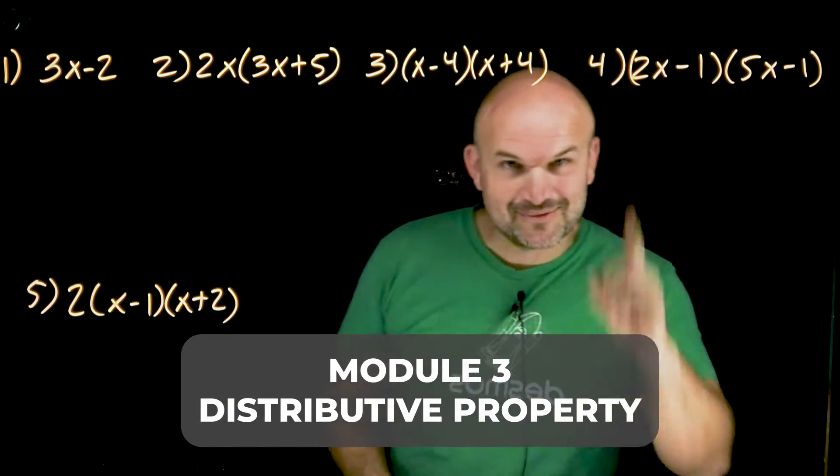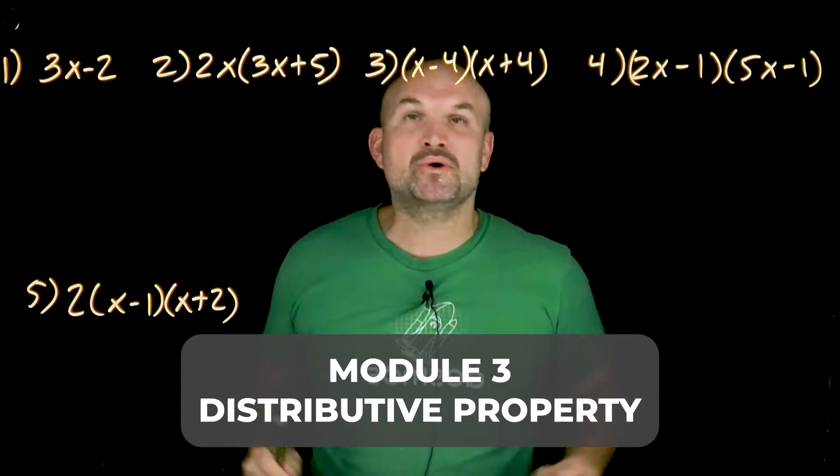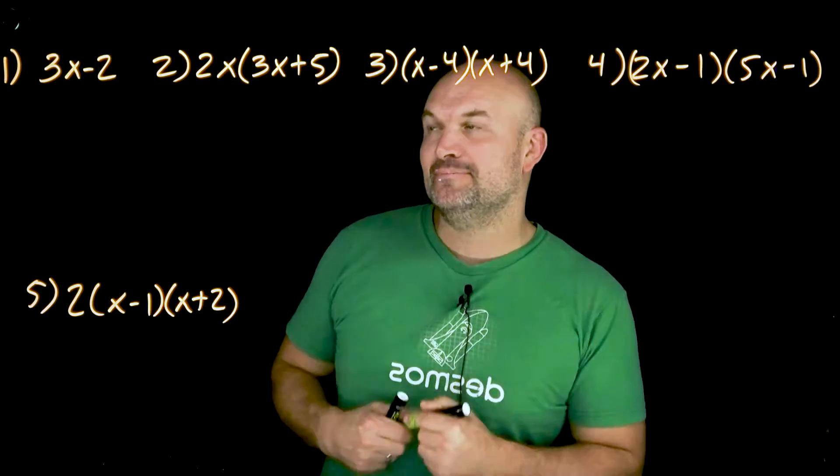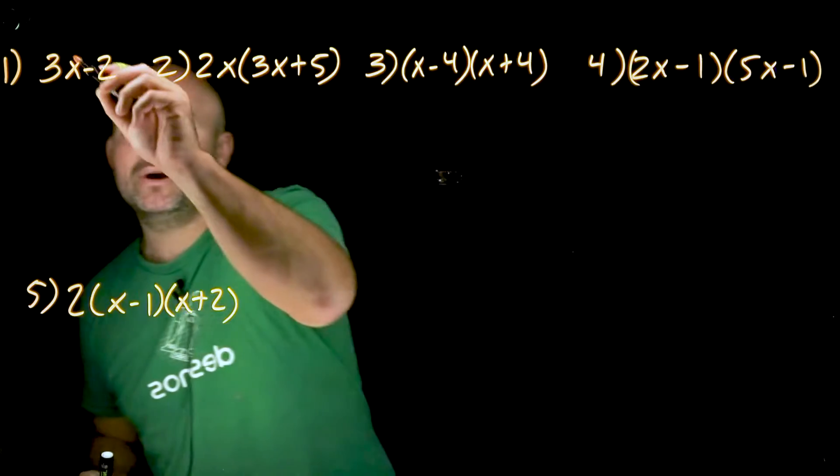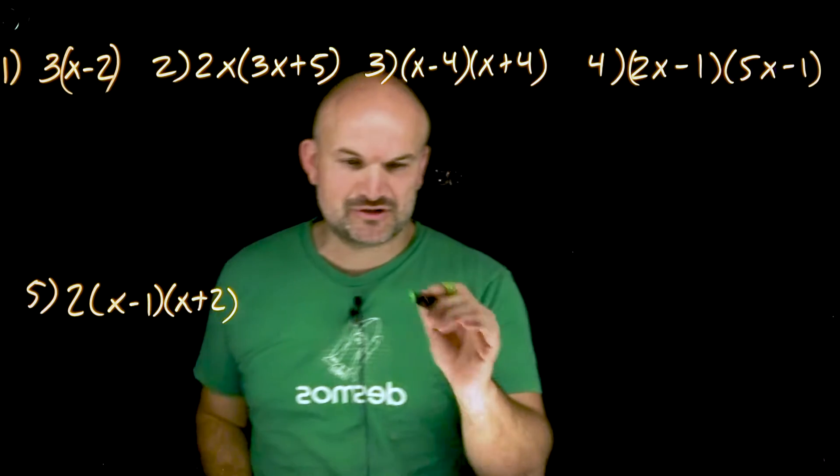All right, distributive property. I know we still have not got to factoring, but I'm telling you, this is probably one of the most important lessons. I want you to be able to visualize what we're doing so you can start to see why it is we're trying to factor and what we are looking for. I kind of forgot some parentheses here. So what we need to do is remember the kind of two rules for distributed property.